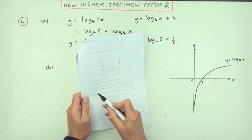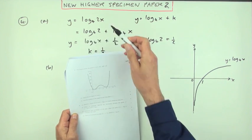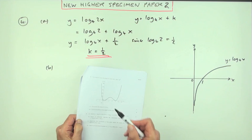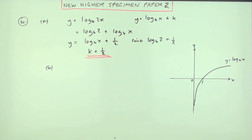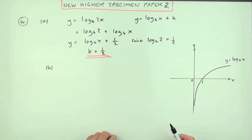Part B: hence or otherwise describe the relationship between the graphs of log base 4 of 2x and log base 4 of just x. Here's the standard graph for a logarithm coming up, crossing the x-axis at 1. This is log base 4.